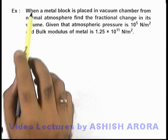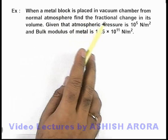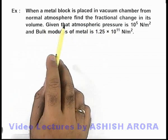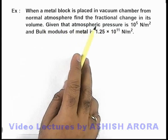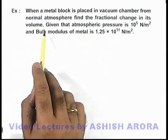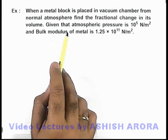In this example, when a metal block is placed in a vacuum chamber from normal atmosphere, we are required to find the fractional change in its volume. The data given to us is atmospheric pressure and the bulk modulus of the metal.